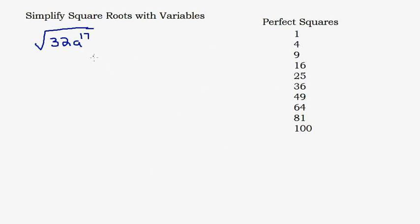Whenever you're simplifying a square root you have to think about what your perfect squares are. I've listed them here: 1 is 1 squared, 4 is 2 squared, 9 is 3 squared, and so on through 4 squared, 5 squared, 6 squared, 7 squared. Because all of these numbers are the result of a number squared, it's easy to take the square root of them — the square root of 4 is 2 and the square root of 9 is 3.